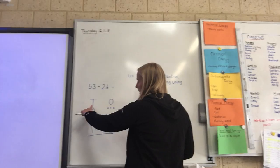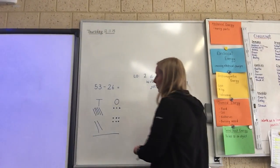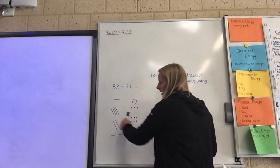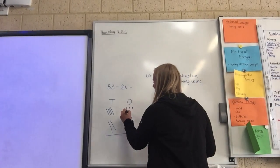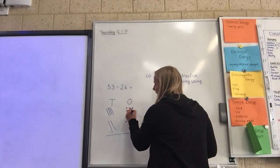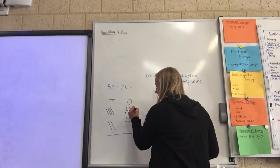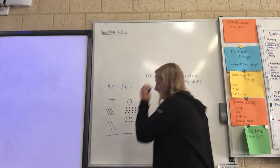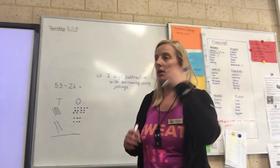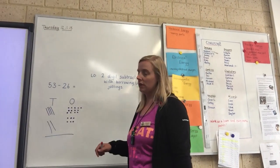We're going to exchange one of our tens rod for ten wands. So I'm going to take here my tens away, and I'm going to move them over here as wands. Okay. So now we've just got the same number, it's just partitioned differently and recorded using jottings.